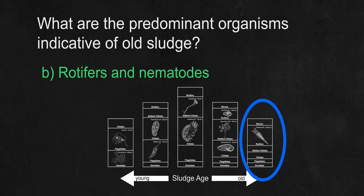The answer is B — rotifers and nematodes. As you can see on this chart, rotifers make up a large portion of old sludge along with worms that appear as sludge ages. In this context, worms and nematodes are the same exact thing.